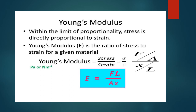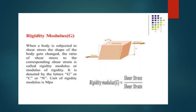Young's modulus is denoted as E. Stress is force per unit area — F by A — and strain is change in length divided by original length — x by L. So Young's modulus E equals stress divided by strain, which gives FL by Ax. Its unit is either Pascal or Newton per meter squared.